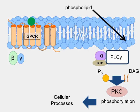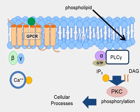Inositol triphosphate, or IP3, also has another important function. It goes on and activates vesicles that contain or store calcium within the cell. By activating them, it causes release of the intracellular calcium storage, so intracellular calcium levels go up. When intracellular calcium levels go up, they also cause a number of changes that affect cellular processes and functions.